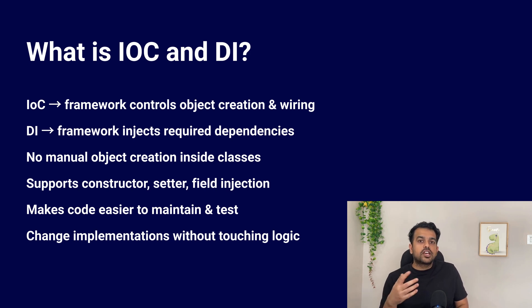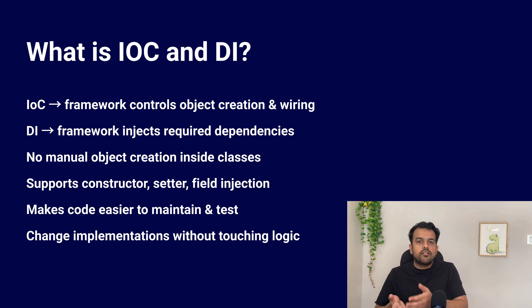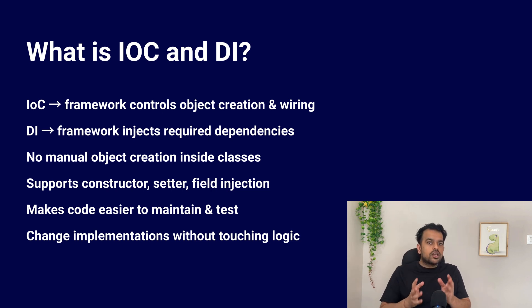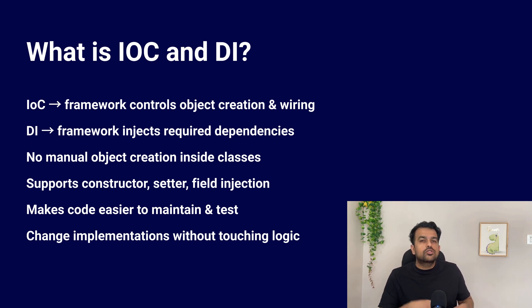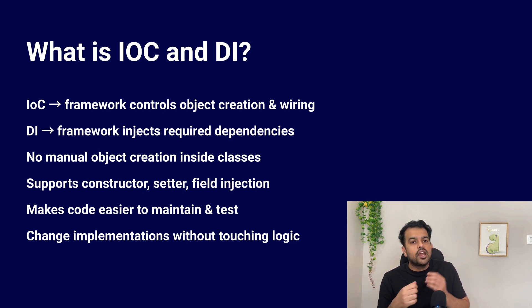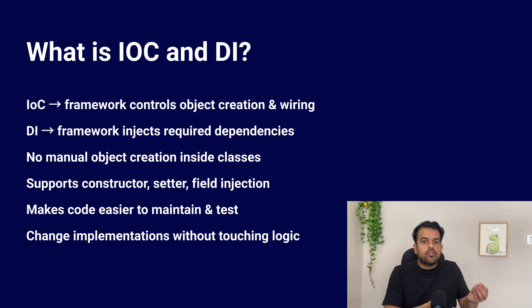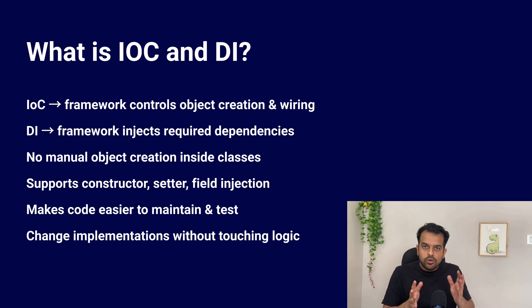For example, if a service needs a repository, we don't write 'new Repository()'; we just have a field or constructor parameter and Spring injects the right bean. This makes the code easier to manage, easier to test, and easier to change. In the future, if you want to switch implementations, you just change the configuration or bean definition — you don't need to touch the business logic. Simply: IoC means the framework controls object creation and wiring, and DI is the way Spring gives required objects to a class instead of the class creating them itself.